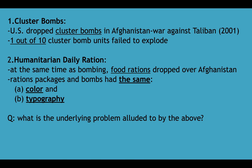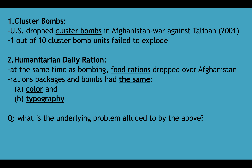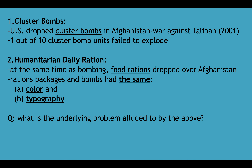Back in 2001, the US dropped cluster bombs in Afghanistan during the war against the Taliban. One out of every ten cluster bomb units failed to explode. At the same time, food rations were also dropped over the same country. As you can see from these pictures, the packages and bombs had the same color — yellow — and similar typography.